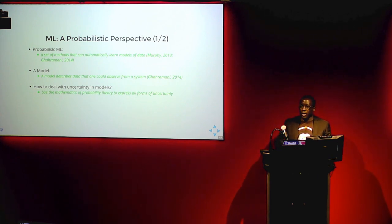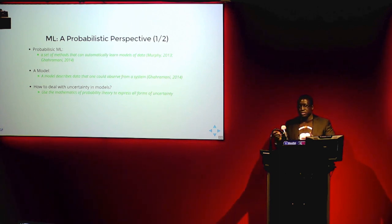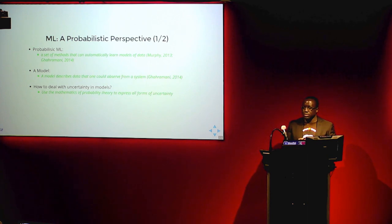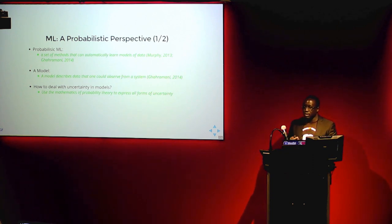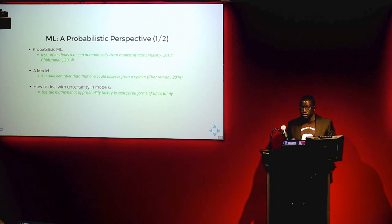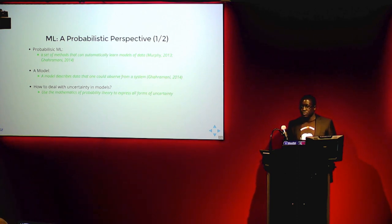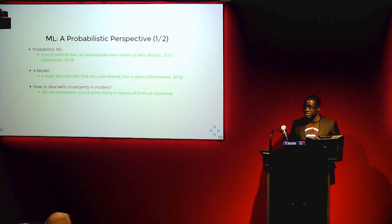The model should be able to quantify uncertainty in the model parameters. To do that, we employ the mathematics of probability theory. Uncertainty is contributed by many items: model parameters, measurement error in data, and the proposed model itself. We use the language of probability theory to capture that uncertainty — we don't need to invent any new math. We just use probability theory that we probably all learned in the first year of undergrad. Everything follows from two simple rules.